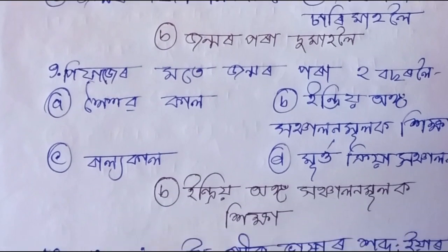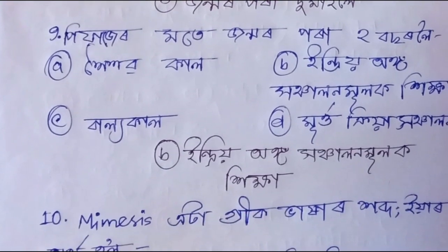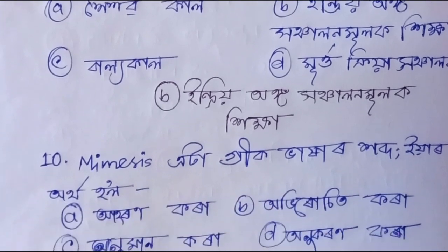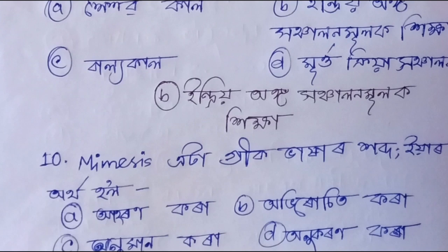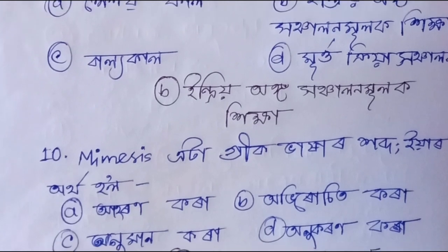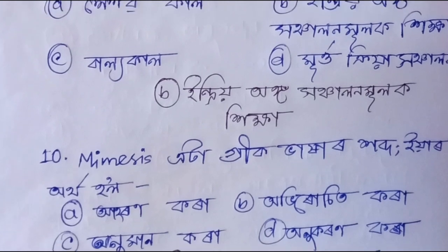Question number ten, last question: Misis etta gribik bahar habda. Option A: haan kwa. Option B: obiwishito kwa. Option C: anuman kwa. Option D: anu kwa an kwa. The correct answer is Option D: anu kwa an kwa.